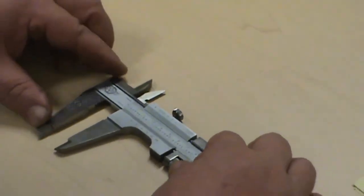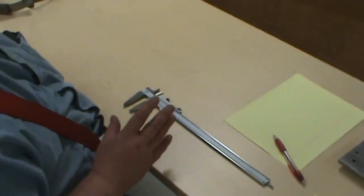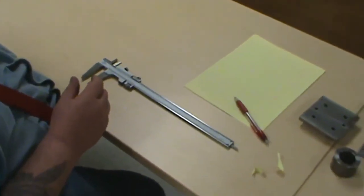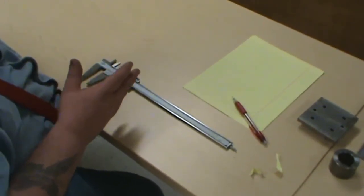Now this is precision measurement as opposed to the square and the steel rule and tape measure, which would have been semi-precision measurement. Precision measurement is anything that is a thousandths of an inch or less.